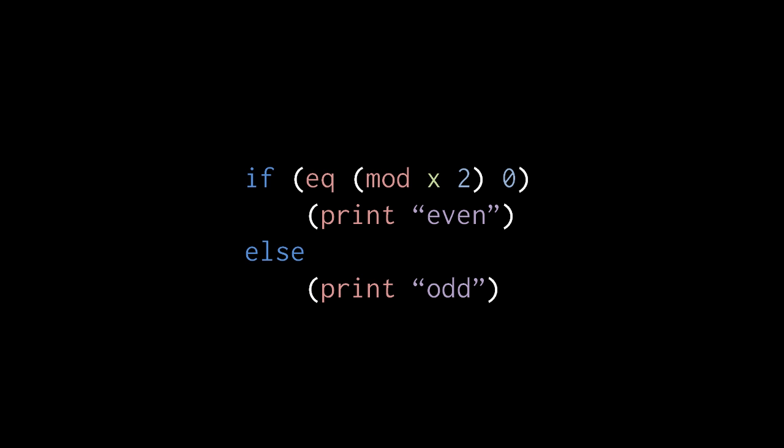Otherwise, when x is odd, mod x 2 will return 1, and 1 is not equal to 0, so the condition will test false, and the code prints odd.